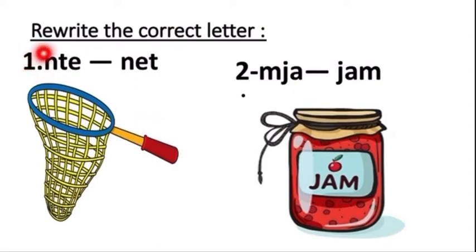First one, rewrite the correct letter. These are all nouns children, naming words. We are just going to write the correct letter. It is a jumbled word. We have to see the picture and write the correct letter. Can you see the picture? It is a net but it is written here in a wrong way. So the correct spelling is N-E-T, net. Second one, jam. The correct spelling is J-A-M, jam.